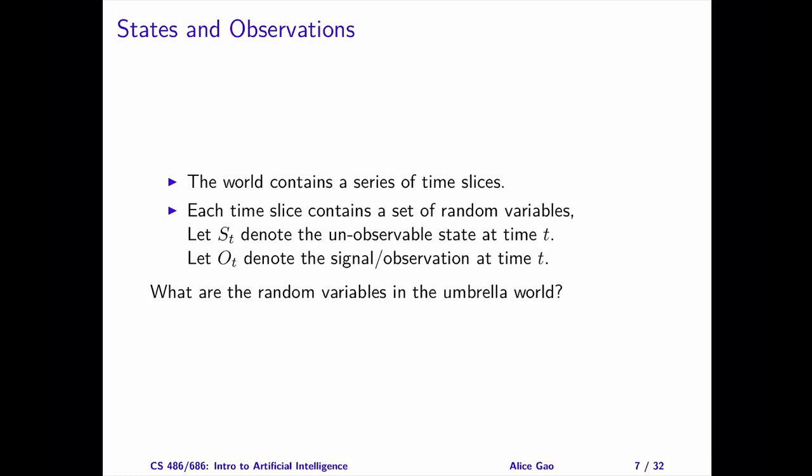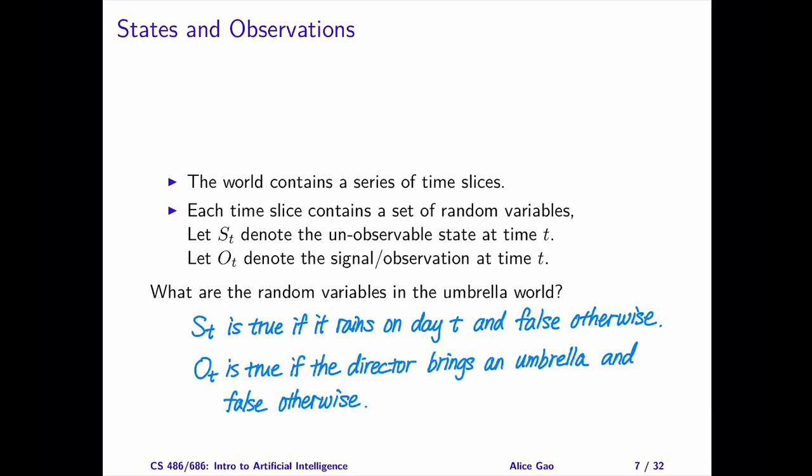Next, let's define some random variables. We need two types of random variables. First, we need to model the state — whether it's raining or not. Let's define a binary random variable S to denote the state. S is true when it's raining and false otherwise. We also need to model our noisy signal or observation. Let's define a binary random variable O to denote the signal or the observation. O is true when the director brings the umbrella and false otherwise. Note that I used subscripts to indicate the time step for each variable.